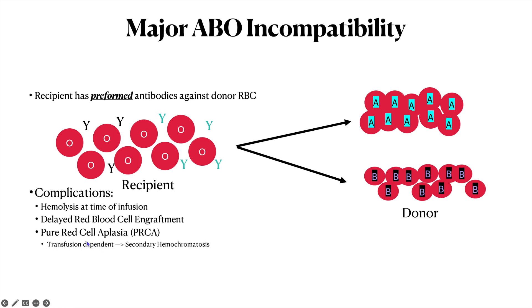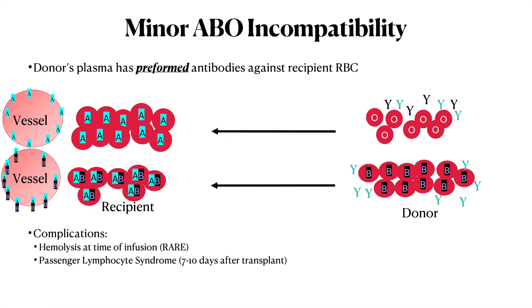If you do have pure red cell aplasia, you become transfusion dependent, and that can lead to secondary hemochromatosis where you might have to get therapeutic phlebotomy to remove that excess iron.